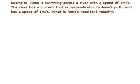So in order to show you the steps involved in adding together two perpendicular vectors, I'm going to look at an example. Here we have Anne, who is basically swimming across a river with a speed of 4 metres per second. The river has a current that is perpendicular to Anne's path, forcing her sideways, and this has a speed of 3 metres per second. So what is Anne's resultant velocity?